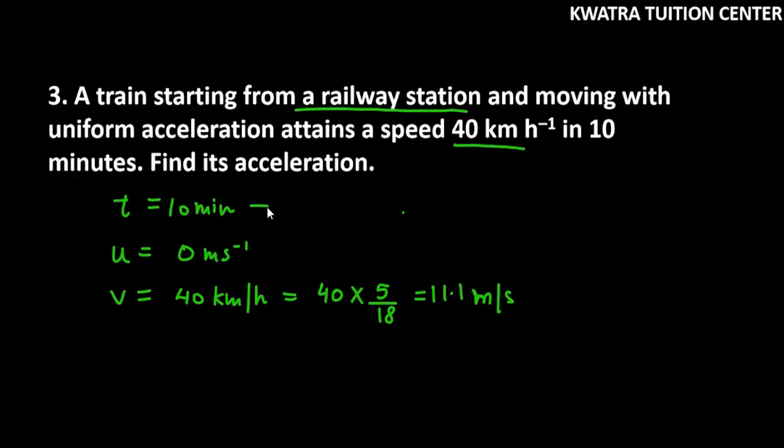Now you have to convert time to seconds, so it will be 600 seconds. The formula is a equals v minus u over t. So v minus u is 11.1 minus 0 over t which is 600, so your value will be 0.0185 meter per second squared.